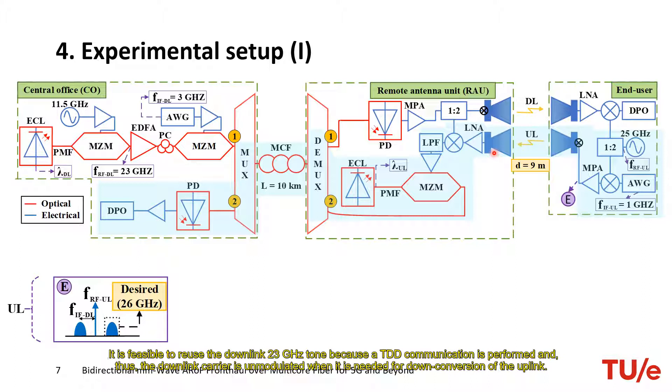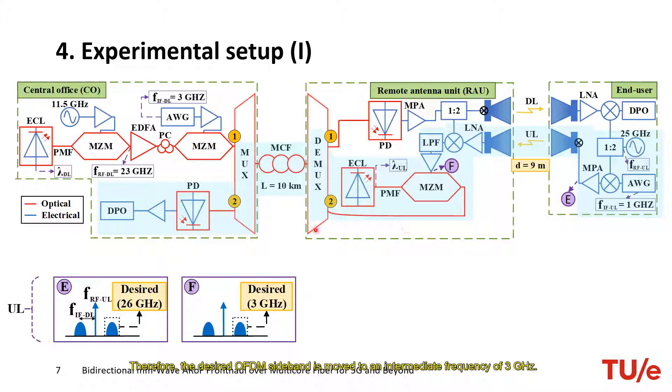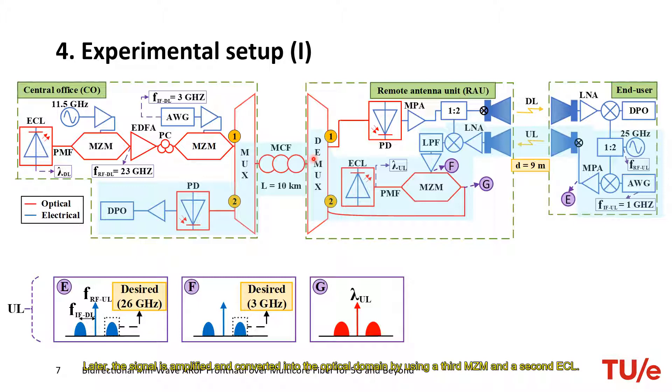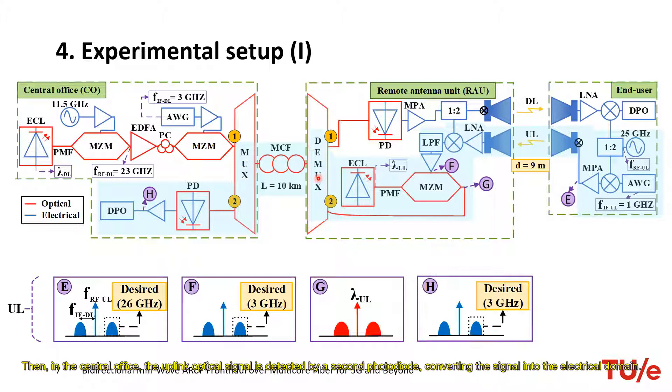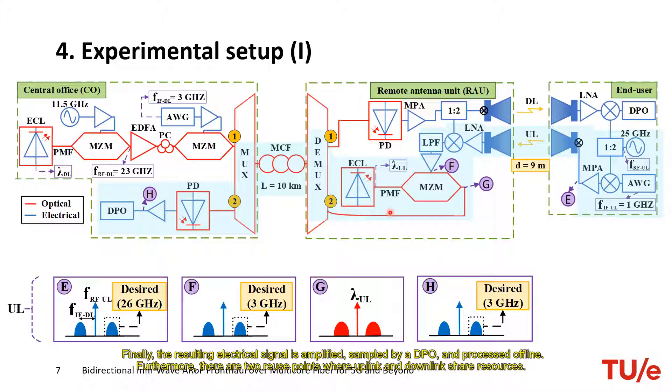Therefore, the desired OFDM sideband is moved to an intermediate frequency of 3 GHz. Later, the signal is amplified and converted into the optical domain by using a third Mach-Zehnder modulator and a second ECL. This optical uplink signal is thrown to a different core of the multicore fiber than for the downlink. Then, in the central office, the uplink optical signal is detected by a second photodiode converting the signal into the electric domain. Finally, the resulting electrical signal is amplified, sampled by a DPO, and processed offline.